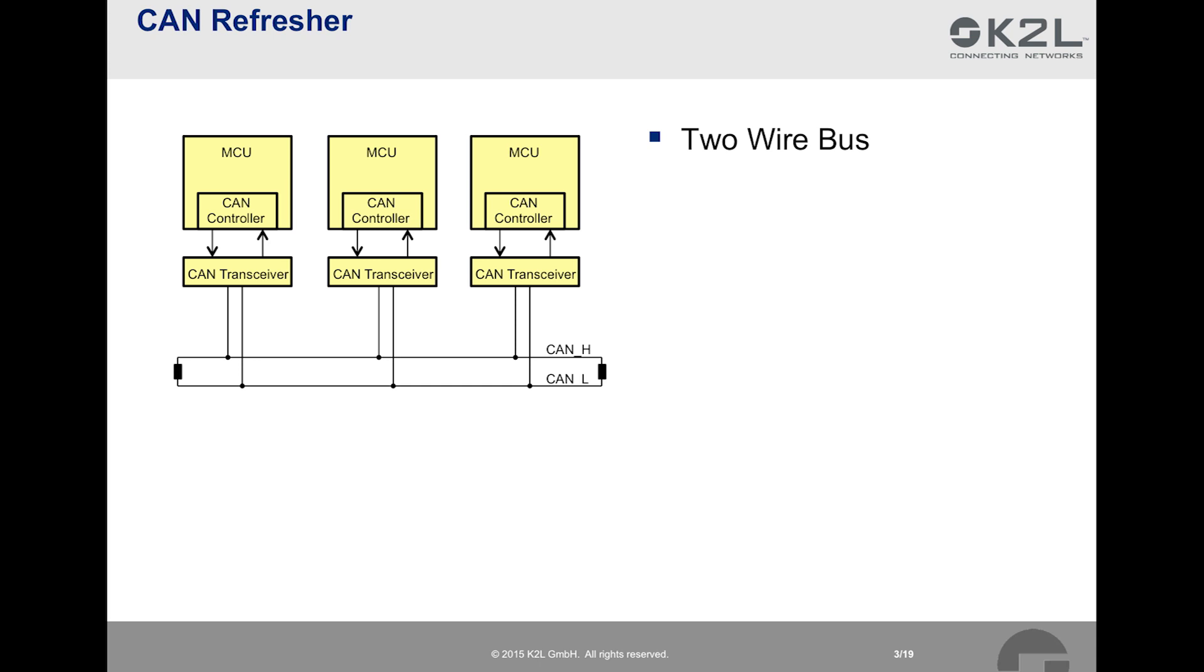The first thing we can notice is that CAN is a two-wire bus. One wire is often named CAN low and the other CAN high. We will see why in a second.